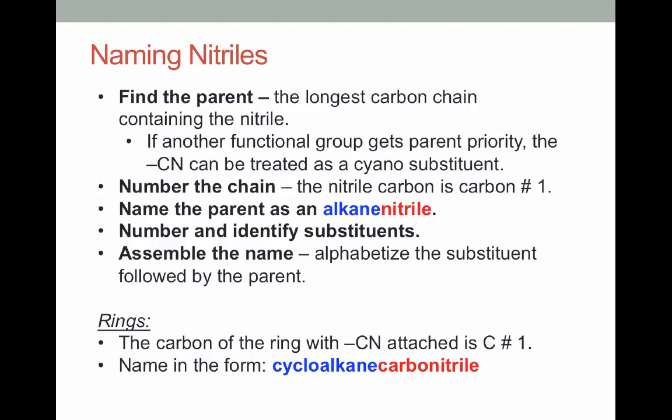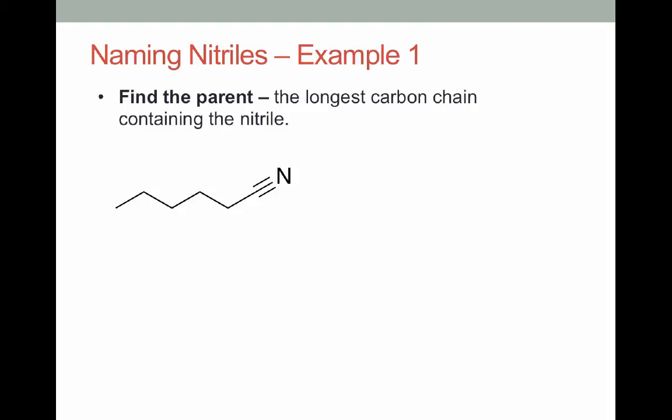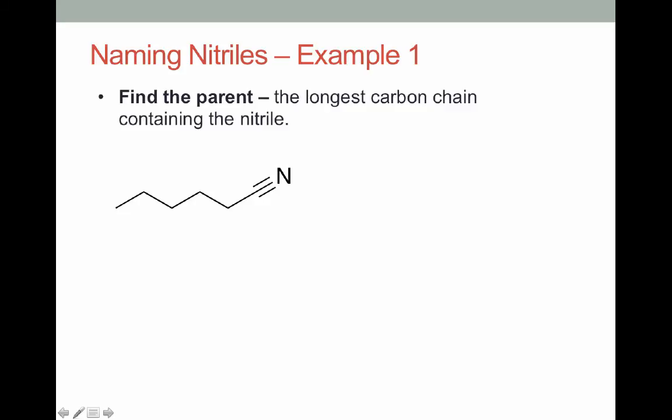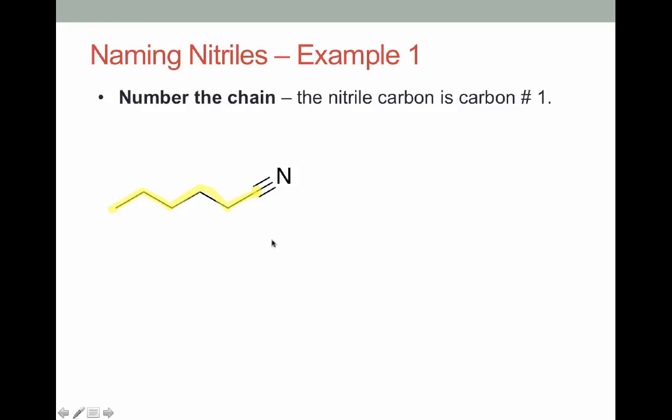We'll start pretty simple with our first example. The first thing you want to do is find the parent, and that's the longest carbon chain that contains the nitrile carbon. So here's our nitrile carbon. If we go out our chain, we can highlight it. The next thing we'll do is number our chain, and this carbon that's part of the nitrile is carbon 1. And we'll just number out our chain.